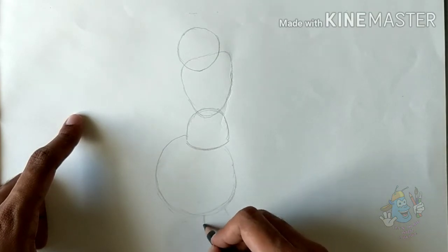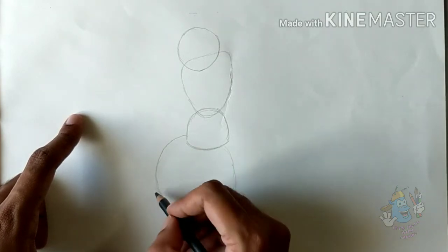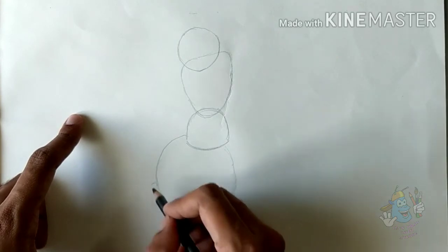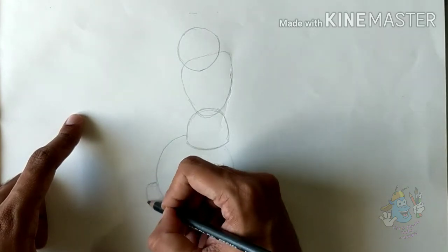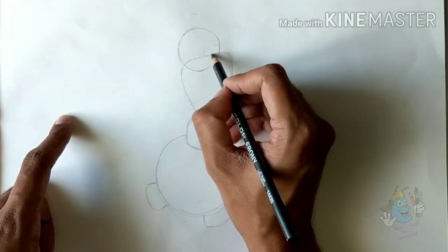Give him two rectangular feet. Olaf is one of the easiest characters to draw.